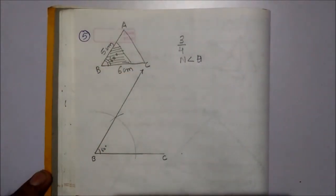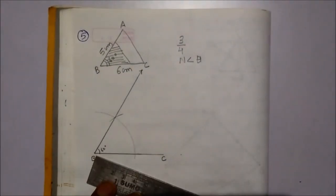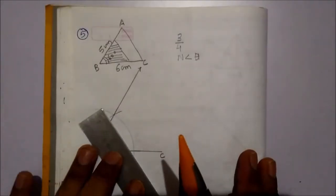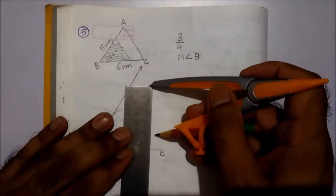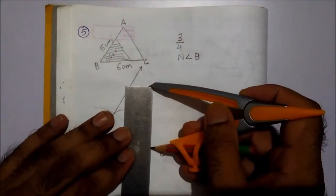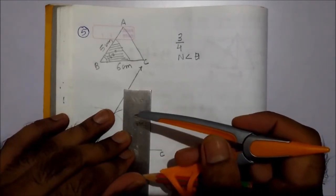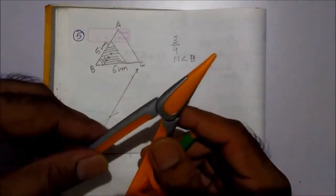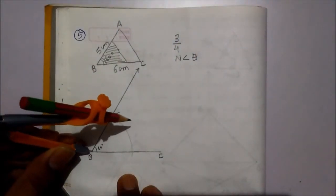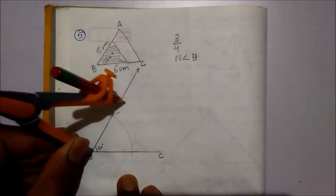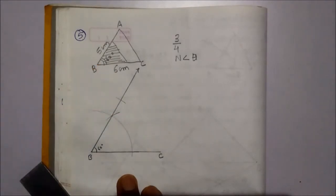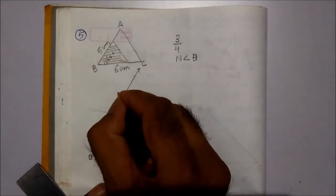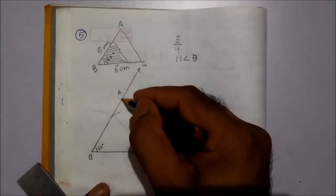Now, AB. The length of AB is 5 cm, so take the radius of 5 cm. B as a center, and again by taking B as a center, intersect the ray. So this is our point A. Join point A and C.